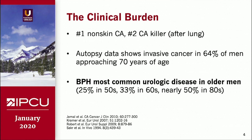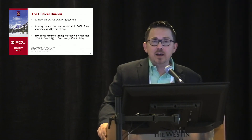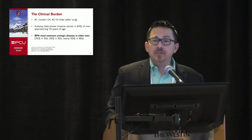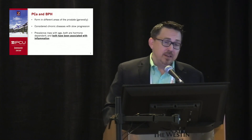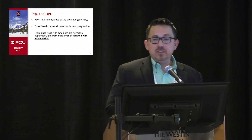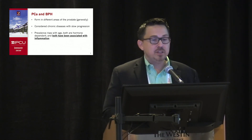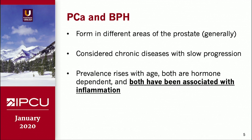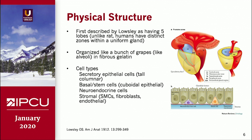Dr. Crawford already showed detailed statistics about the clinical burden of disease. Nearly 70 percent of 70-year-olds have prostate cancer at autopsy, as Sakr at Wayne State showed years ago. In terms of clinical disease, BPH is still the most common symptomatic urologic disease in older men — nearly half of octogenarians. Prostate cancer and BPH generally form in different areas of the prostate, although transition zone cancers do exist. Both are considered chronic diseases with slow progression, and prevalence of both increases with age.